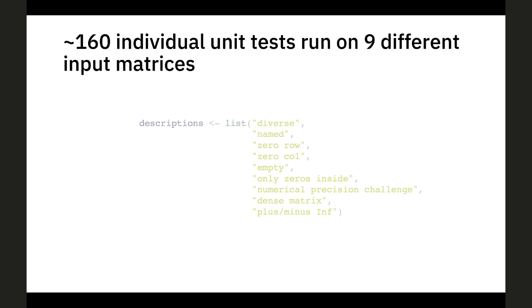I haven't hand-coded all 1,400 unit tests — instead I have roughly 160 unit tests and run them repeatedly over nine different input matrices covering different edge cases: one with all kinds of different values, one with names, one with zero rows, zero columns, one completely empty, one with only zeros, one with very large and very small numbers to check numerical precision, and one with only plus and minus infinities. Often, when I added a new edge case matrix type, I'd suddenly find five new bugs because I'd realize I hadn't thought about that edge case.